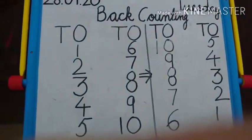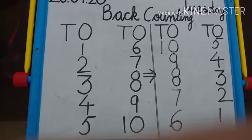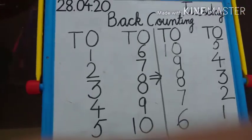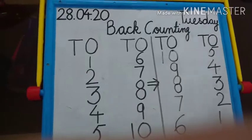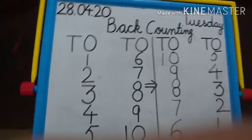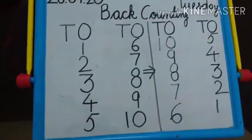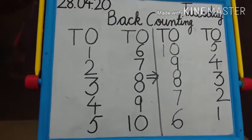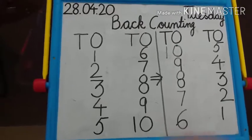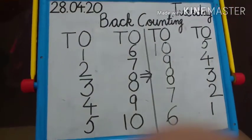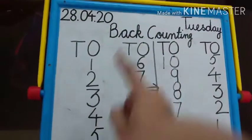Back counting means coming back. Aapne kaun si counting start karni hai? Back counting, pichhe se start karni hai. Kahan se? Pichhe se. Dekho, jaise ki aapne 10 se agar start karna hai counting to aap sabse pehle kaun sa number likhoge? 10. Then usse pehle 9, then 8, then 7, then 6, then 5, 4, 3, 2, 1, 0.